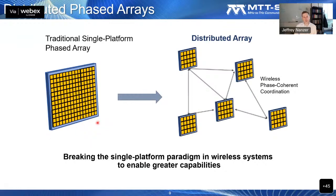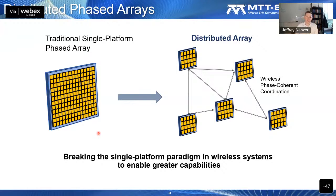With distributed phased arrays, what we're trying to do is overcome some of the limitations of single-platform phased array systems. Traditionally, to increase the capabilities of a wireless system—whether increasing gain, directivity, throughput, or SNR for a radar system—we look to increase the aperture size of our phased array or increase the efficiency and gain of the amplifiers behind each element. There have been outstanding developments in single-aperture single-platform systems, but they have inherent limitations in terms of how large you can make them, particularly for satellites.